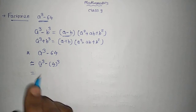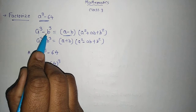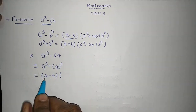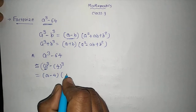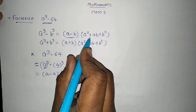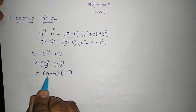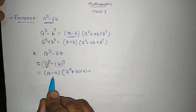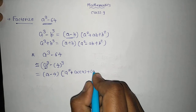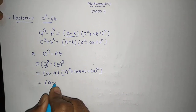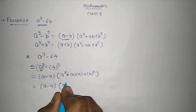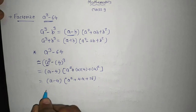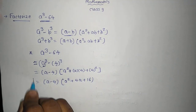Then we apply the formula: a cube minus 4 cube is equal to a minus 4, into the other bracket. We need the square of the first term, that is a, so I write a square. Here it is minus sign, so we keep it plus, then multiplication of both terms: a into 4, so I write 4a, plus the second term whole square, that is 4 whole square, which equals 16. So the answer is a minus 4, into the bracket a square plus 4a plus 16. This is how you can do the factorization of a cube minus 64.